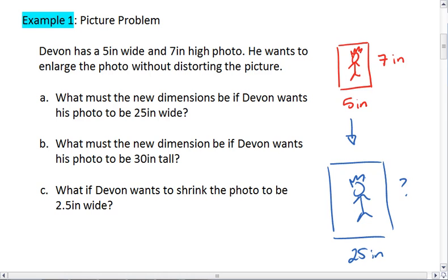There's a number of ways we can solve this. Some of you might realize that Devon multiplied the width by 5, which means he would also need to multiply the height by 5, giving you a height of 35 inches. This method is called scaling.